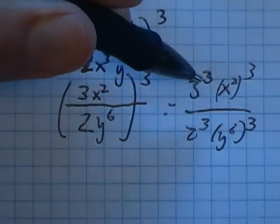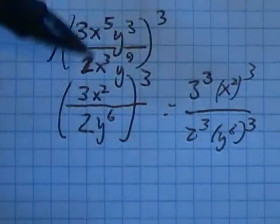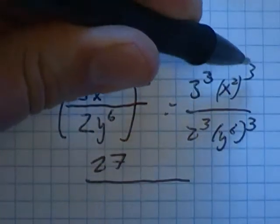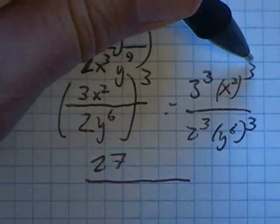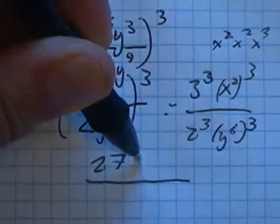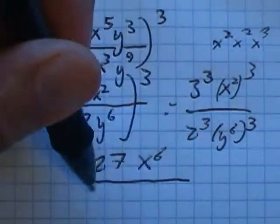Everything's cubed in there. And you might skip that step. You might just do it. 3 cubed is 27. x squared cubed, that's x squared times itself 3 times. That's 3 of these. So it's x to the 6th. 2 cubed is 8.